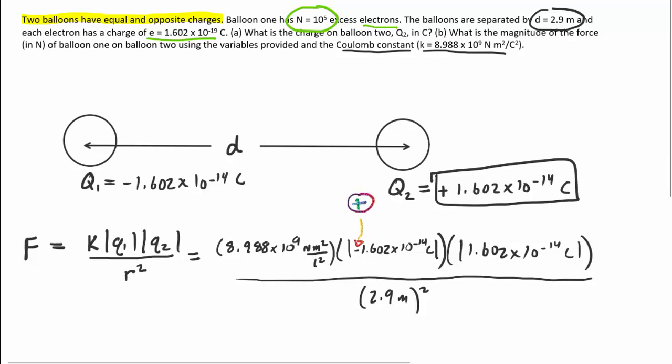So when we plug these values into our calculator, we should get a force of roughly 2.74 times 10 to the power of negative 19, and this force will come out in the standard unit of newtons since we use standard units in all of the values that we entered in. So this would be the correct answer to part B.